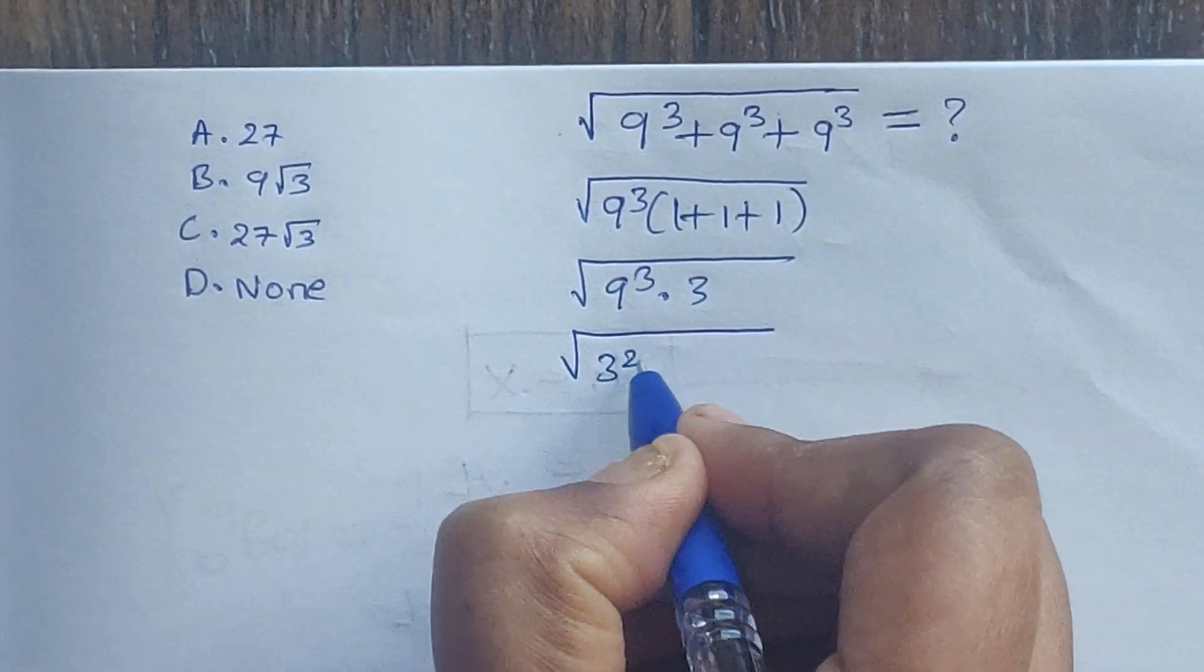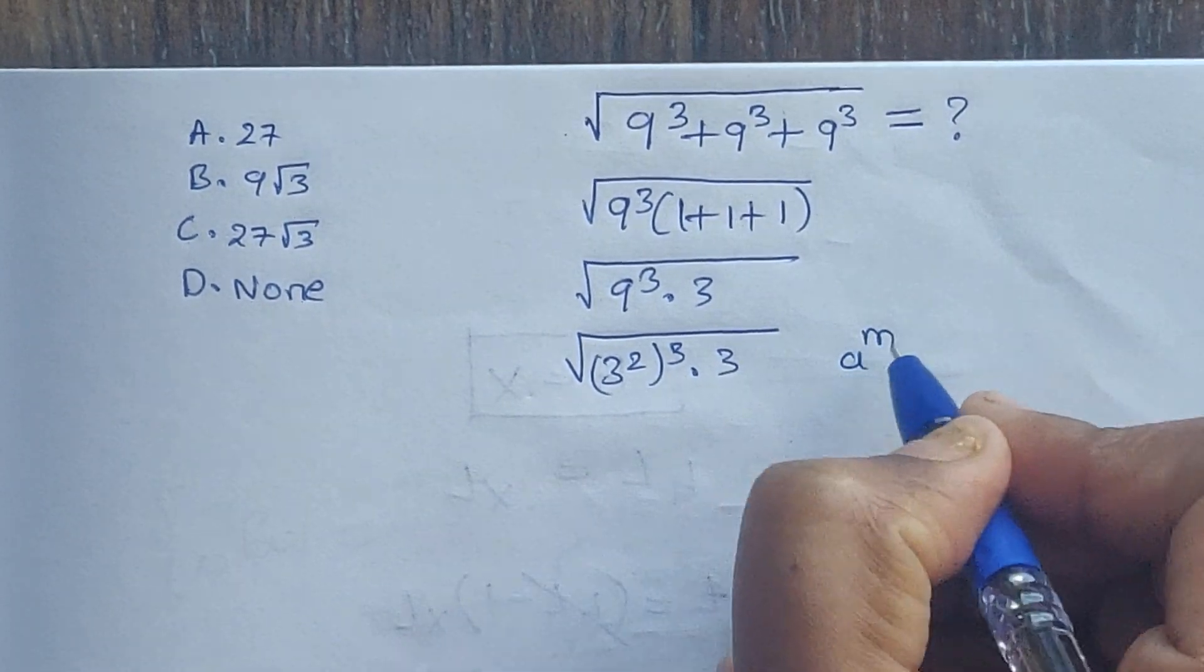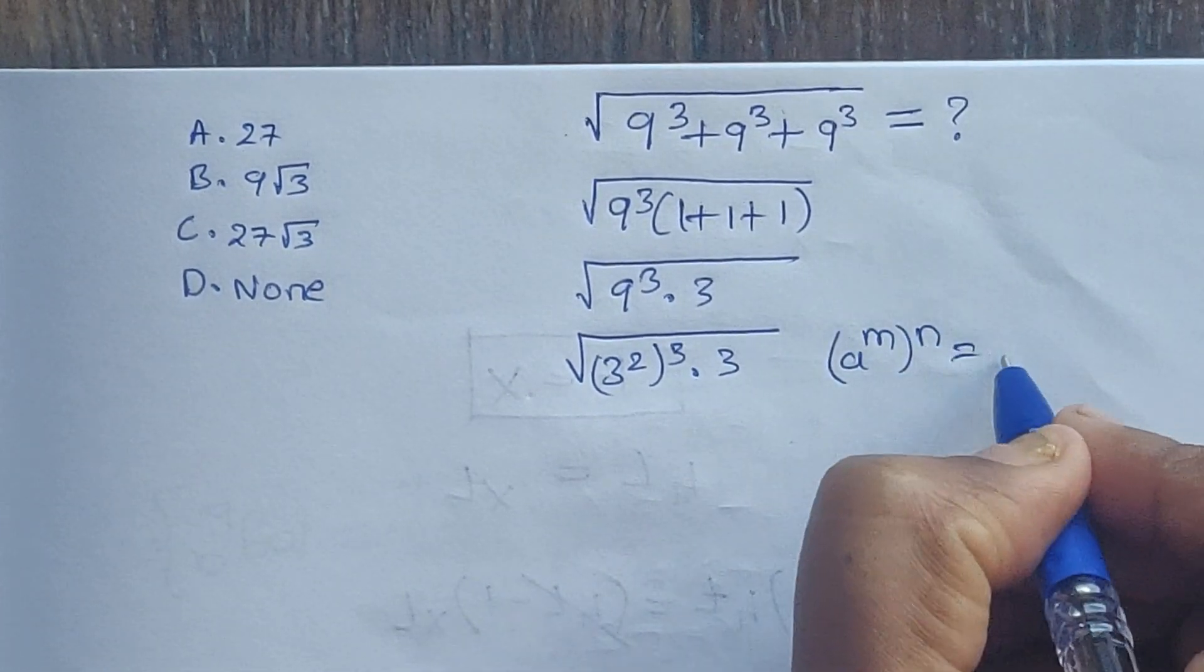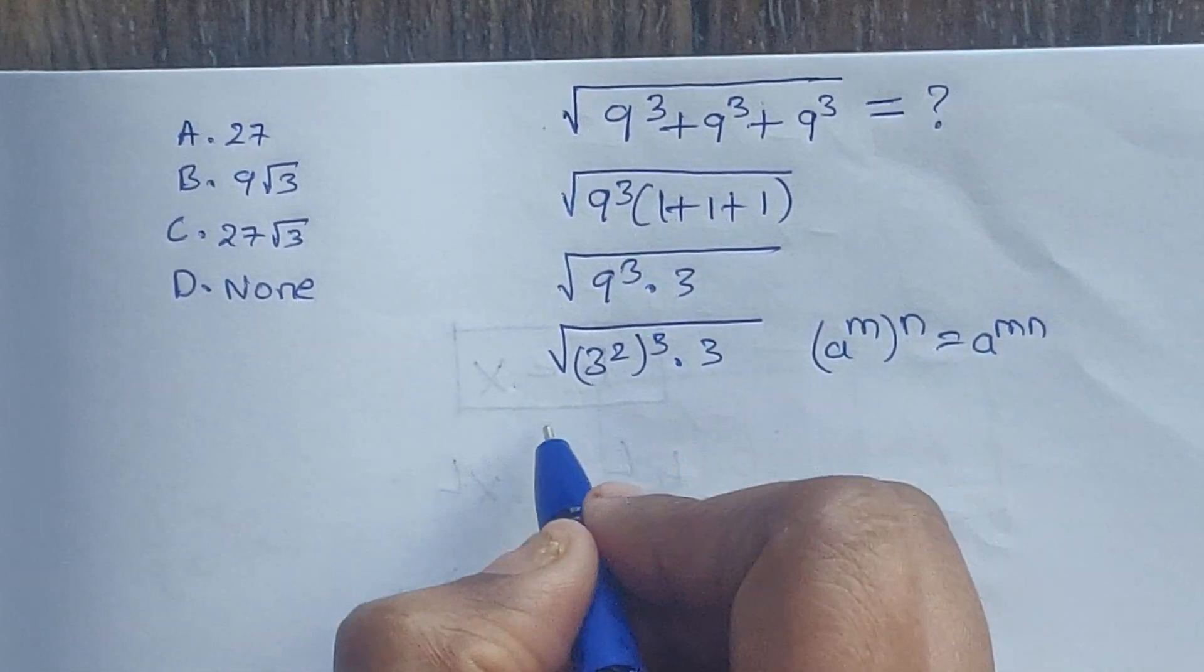So 9 we can write it as 3 square, whole to the power of 3, times 3. So (a to the power of m) whole to the power of n equals a to the power of m times n. So I am going to use this formula here.